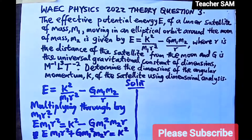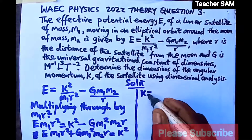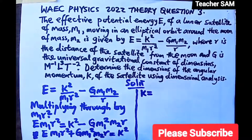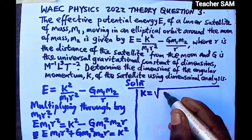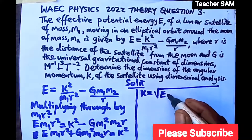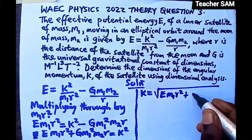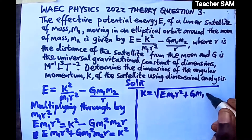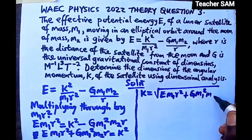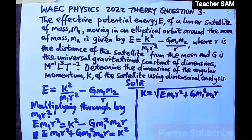So K² = E·M1·R² + G·M1²·M2·R, which means K equals the square root of the whole expression: K = √(E·M1·R² + G·M1²·M2·R). That is what we are going to work with.